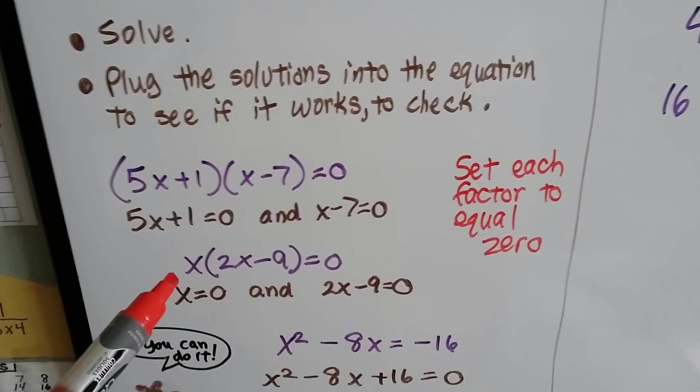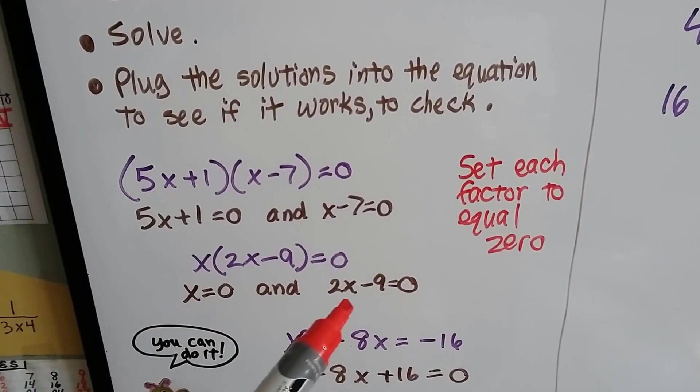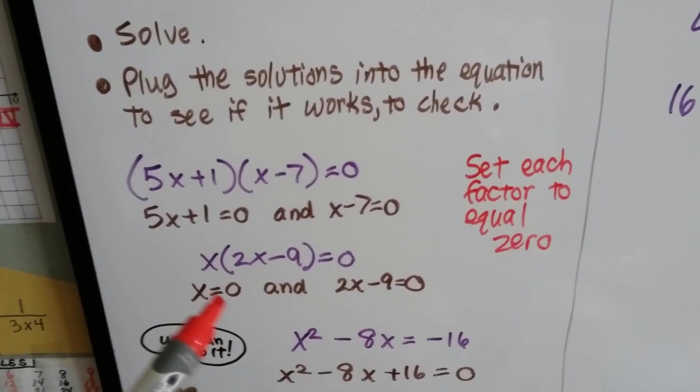We set each factor to zero. If we have something like x times 2x minus 9, we set the x to equal zero and the 2x minus 9 to equal zero, and solve them separately.